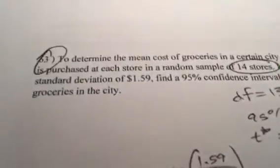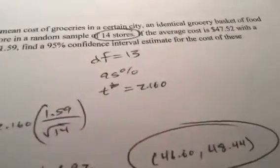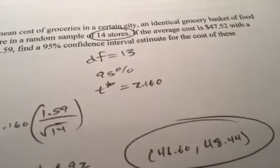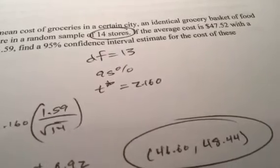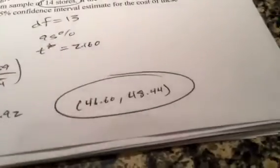And let's see here. This next one, this is just a T-distribution. One sample confidence interval. You have 13, 95% confidence interval. That T-star is 2.160. There's your margin of error and there is your interval.